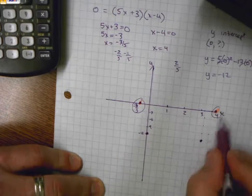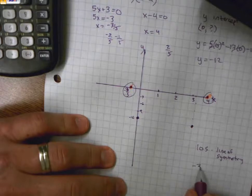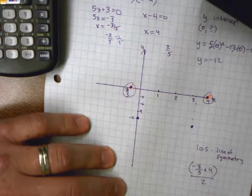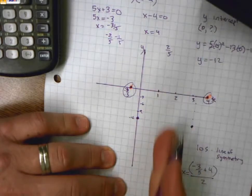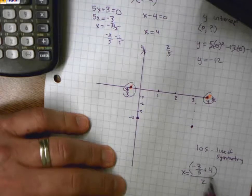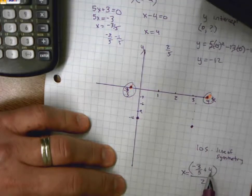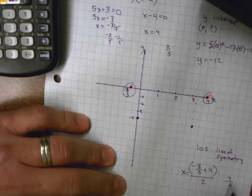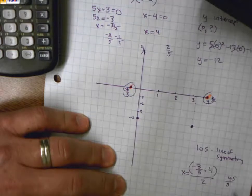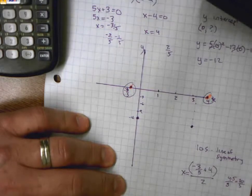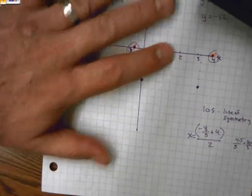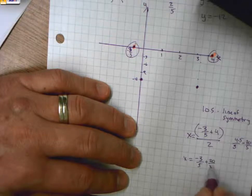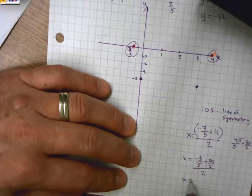The line of symmetry will be the average of the two x-intercepts. So if I take negative 3/5 plus 4 and divide that by 2, that'll give me the x value of that line right at the middle. So how do I combine these two? Well, one's a fraction, one's a whole number, so I better put them in a common denominator. I'm going to change this one. I'm going to take 4 and put it over 5. When I do that, I have to multiply the top times 5 as well. In other words, it's 20/5. So now I've got x is equal to negative 3/5 plus 20/5 over 2.